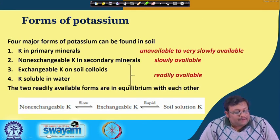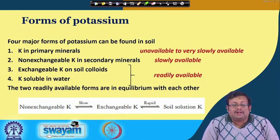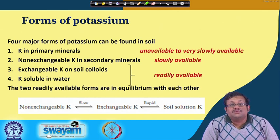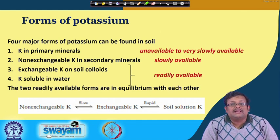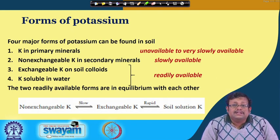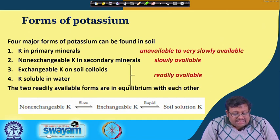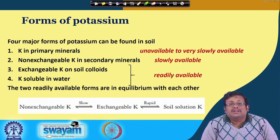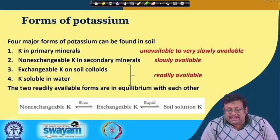There are four major forms of potassium in the soil: potassium in primary minerals (unavailable to very slowly available); non-exchangeable potassium in secondary minerals (slowly available); exchangeable potassium on soil colloids; and potassium soluble in water. The latter two are readily available to plants and are in equilibrium with each other. The conversion from non-exchangeable to exchangeable potassium is very slow, whereas the conversion between exchangeable form and soil solution potassium is fairly rapid.